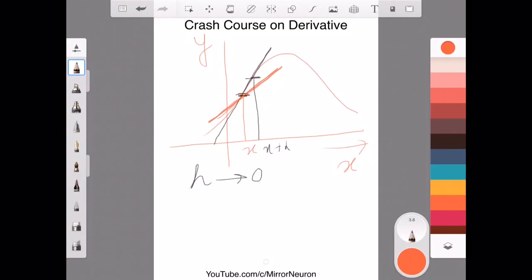So in that case, if I move by h amount, then what would be my change in the y direction. So basically, I am looking for what would be my new value at x plus h.